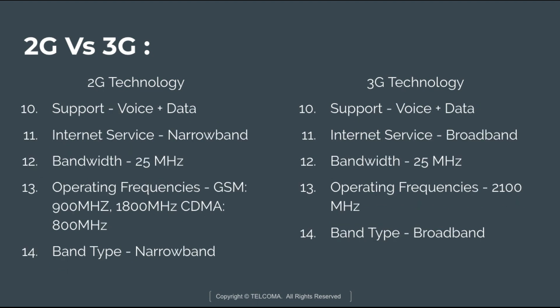2G technology supports voice plus data, whereas 3G technology supports voice plus data and also some video services. In 2G technology the internet services are used over narrowband, whereas in 3G technology the internet services are used over broadband. Both 2G and 3G technology have a bandwidth of about 25 MHz.